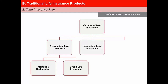The second variant is increasing term insurance, which provides a death benefit that increases along with the term of the policy; the premium generally increases as the amount of coverage increases. The third is term insurance with return of premiums, which is very popular in India as it leaves the policyholder with the satisfaction that he or she has not lost anything in case of surviving the term. Obviously, the premium paid would be much higher than that applicable for an equivalent term insurance without return of premiums.